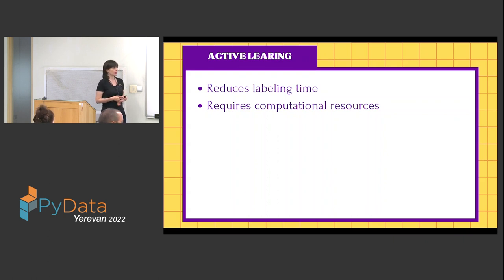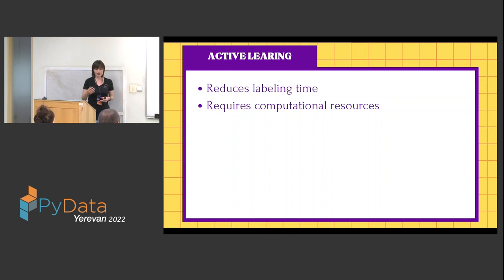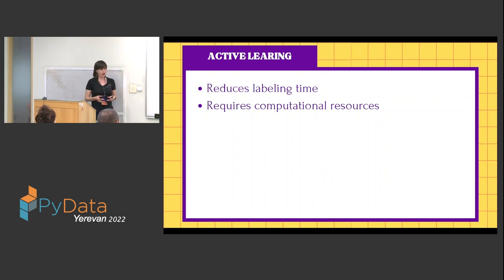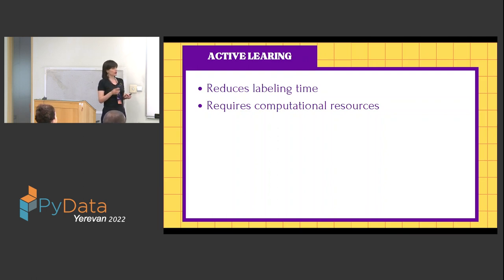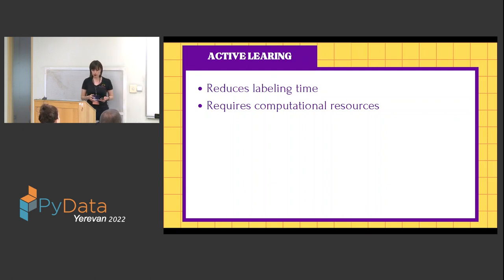The third approach is entropy-based, where we take the entropy of all predictions. Samples with the highest entropy are selected for training. With active learning, we reduce labeling time since not all data is labeled, and we select samples based on criteria. However, as this is an iterative loop, it requires a lot of computational resources since we are iteratively training the same model.